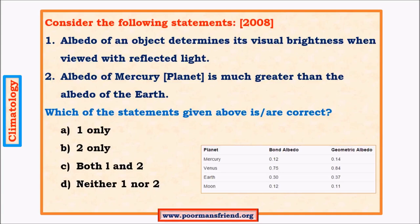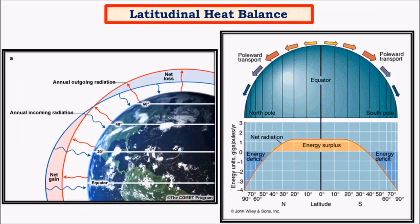Next question: consider the following statements — albedo of an object determines its visual brightness when viewed with reflected light; albedo of Mercury planet is much greater than albedo of earth. From the table, Mercury has comparatively less albedo than earth, so statement two is incorrect. Only statement one is correct — albedo does signify visual brightness. A region with greater albedo like snow has greater visual brightness, while a region with lesser albedo like asphalt has lesser visual brightness.